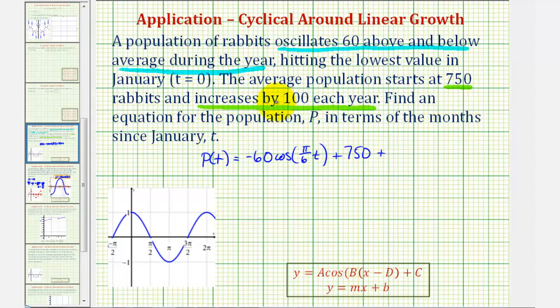And since t is the number of months, the slope is not going to be 100 because that's 100 per year. The growth per month would be 100 divided by 12. So 100 divided by 12 times t. So here's our oscillation part, here's our starting population, and here's the linear growth, again, per month, not per year.